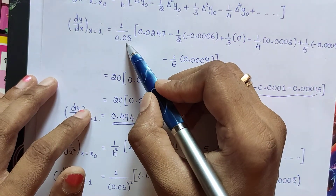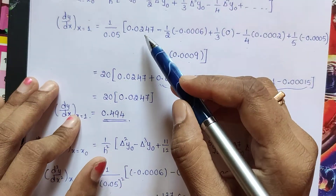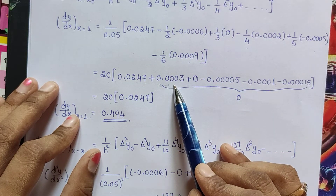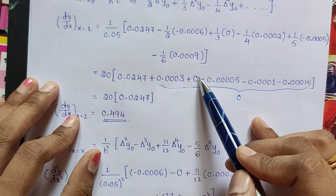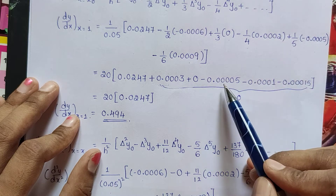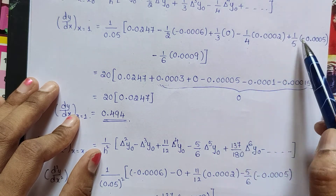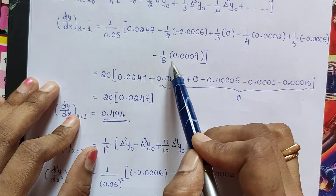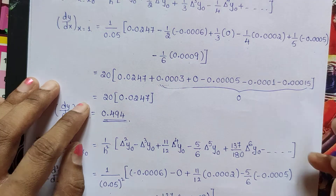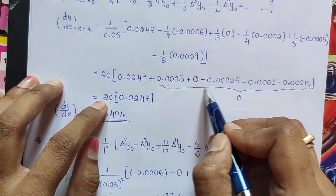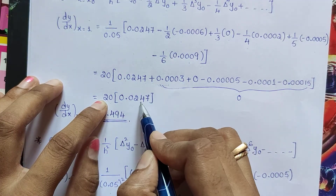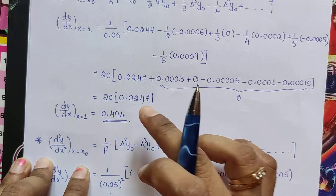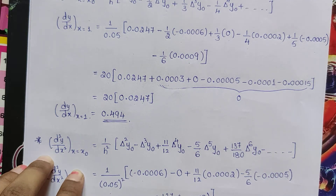So 1/0.05 gives 20. Writing out the calculation: 0.0247, minus times minus gives plus (1/2 × 0.0006 = 0.0003), something multiplied by 0 becomes 0, minus (0.0002/4 = 0.00005), plus into minus gives minus (0.0005/5 = 0.0001), and minus (0.0009/6 = 0.00015). Multiplying by 20, if you add and subtract all these terms, the remaining value is 0.0247, so the first derivative equals approximately 0.0247 × 20. This is the first derivative of the given function.